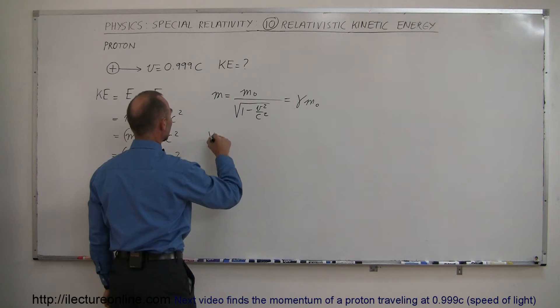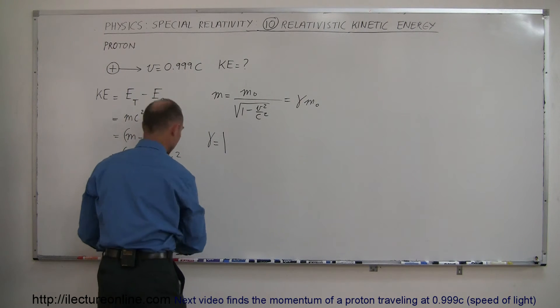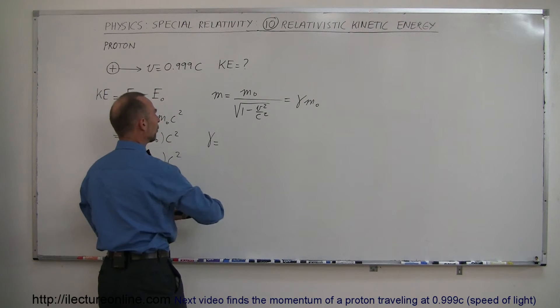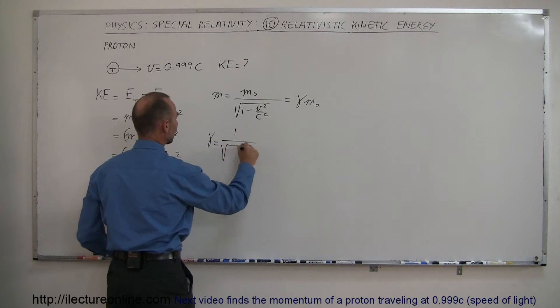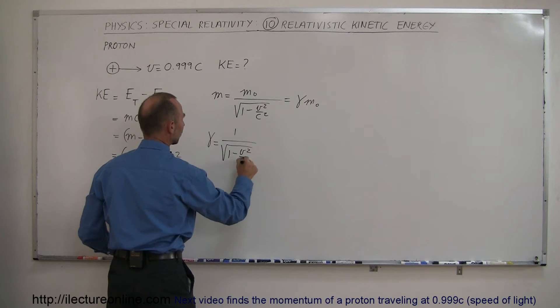So let's figure out what gamma is equal to in this case. And I always get ahead of myself. It's 1 over that, 1 over the square root of 1 minus v squared over c squared.